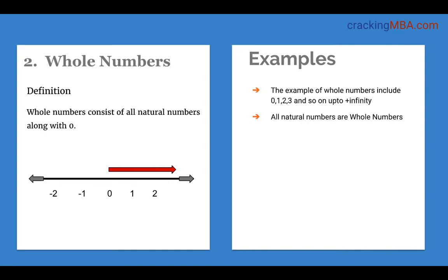The next set is the whole numbers. This includes all the natural numbers along with the number 0. So it includes 0, 1, 2 and so on up to plus infinity. Naturally all natural numbers are a subset of whole numbers. So whole numbers include 0 and all the natural numbers such as 1, 2, 3 and so on.